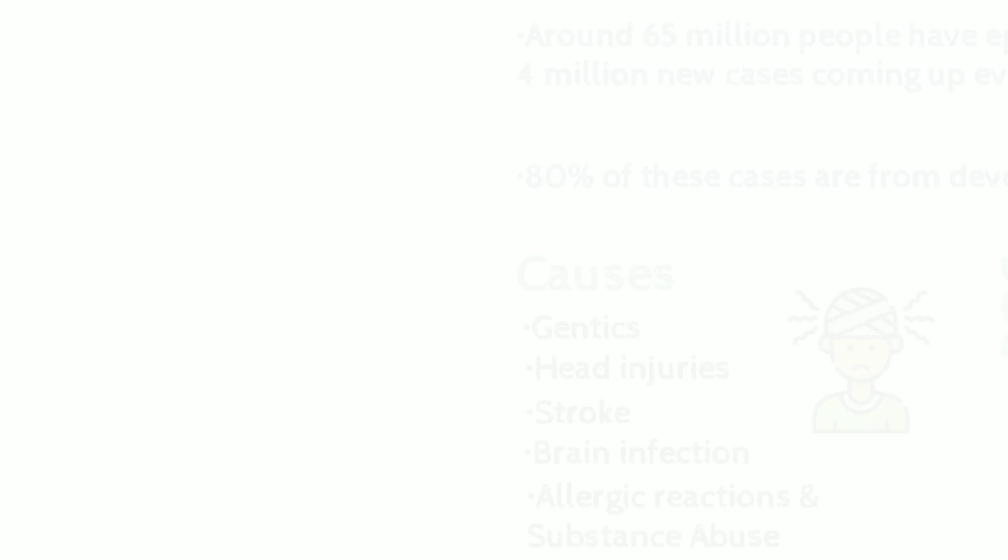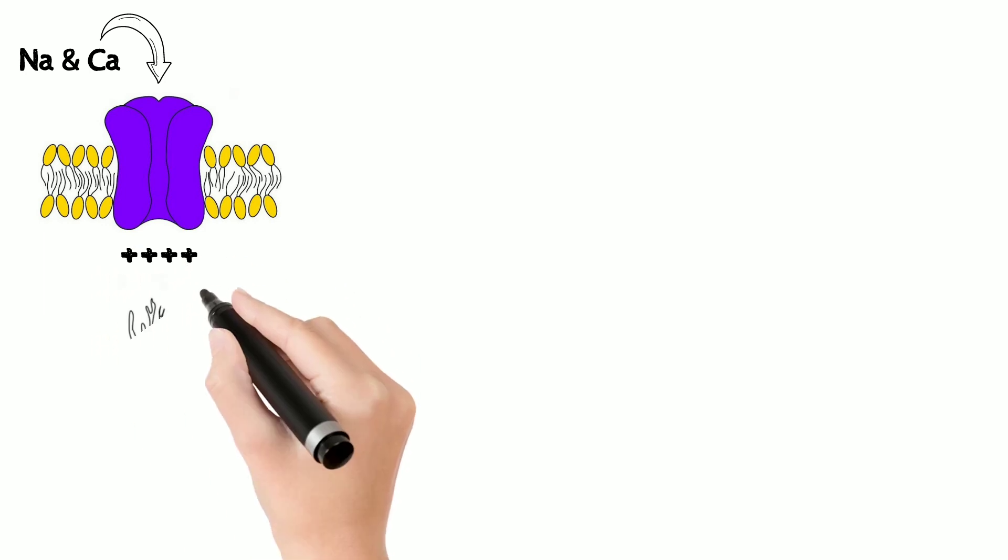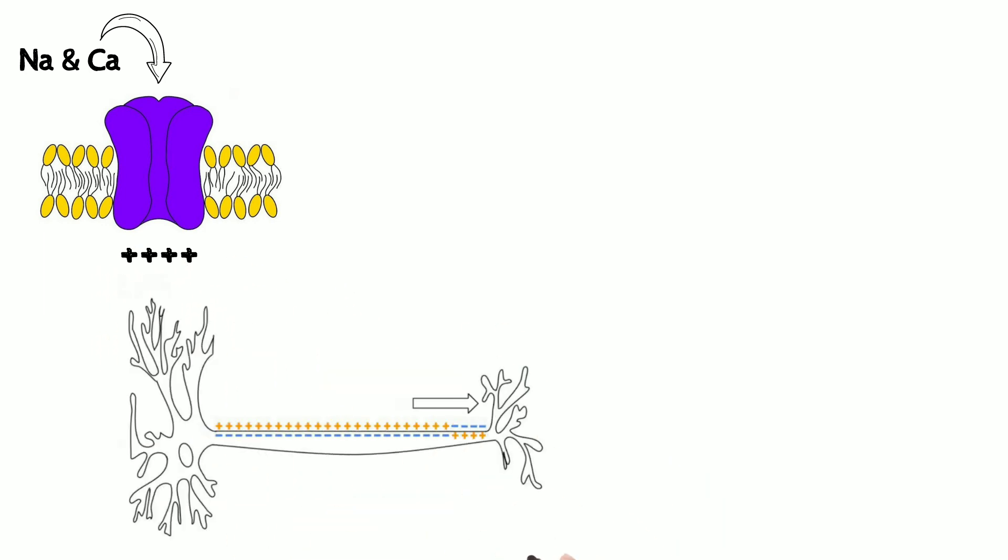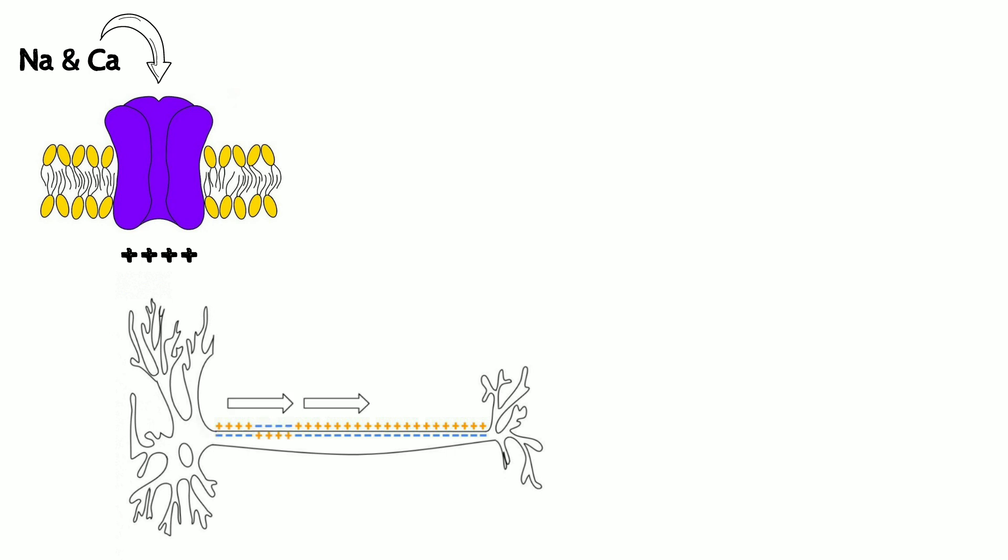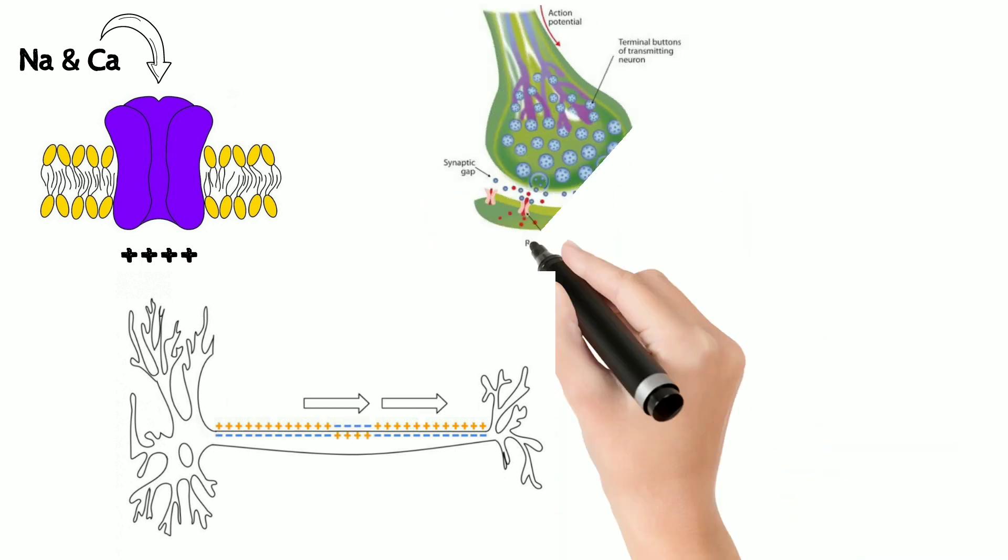So before we jump into anything, let's review the normal mechanism of signal conduction in the brain. With the onset of stimulus, sodium and calcium go inside the neuron through the respective channels causing depolarization. This depolarization travels through the length of the neuron and releases neurotransmitter into the synapse which acts as a signal for the corresponding neuron.